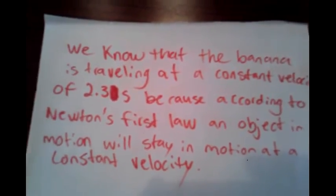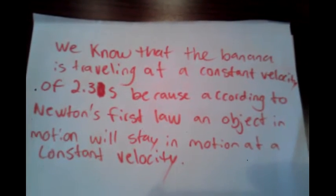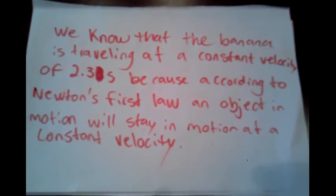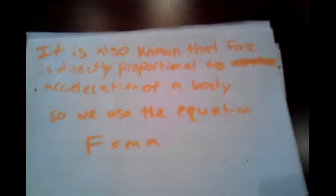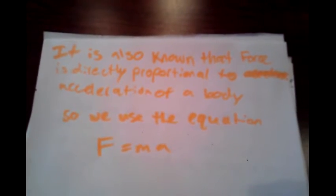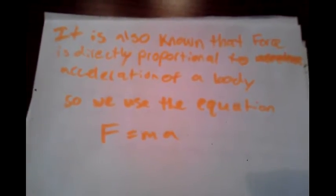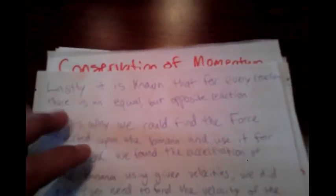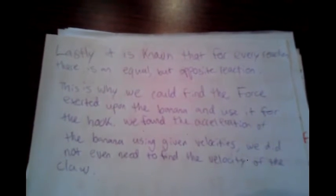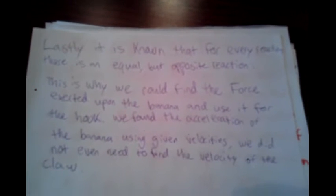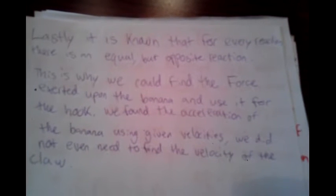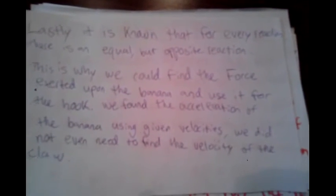We know that the banana is traveling at a constant velocity because according to Newton's first law, an object in motion will stay in motion at a constant velocity. The force is directly proportional to the acceleration of a body, so we may use the equation force equals mass times acceleration. Lastly, for every action there is an equal and opposite reaction, which is why we could find the force exerted upon the banana and use it for the hook, because they are equal and opposite. We found the acceleration of the banana using the given velocities and did not need to find the velocity of the claw.